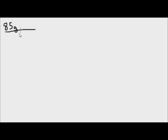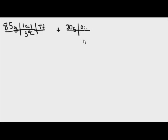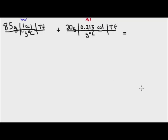Now we're ready to substitute in the values. We start with 85 grams — the mass of the water — multiplied by the specific heat of water, 1 calorie per gram degree Celsius, multiplied by the final temperature. Next, 20 grams — the mass of aluminum — multiplied by the specific heat capacity of aluminum, 0.215 calories per gram degree Celsius, also multiplied by the final temperature. Multiplying these values through, we can add them together with both multiplied by Tf.